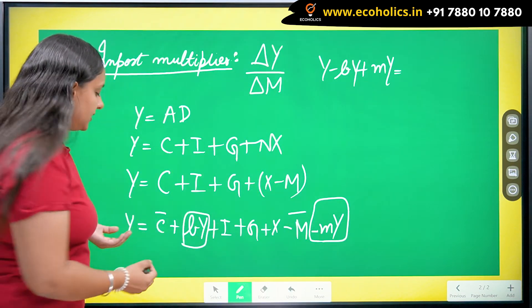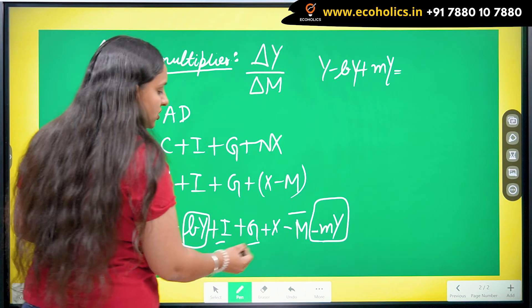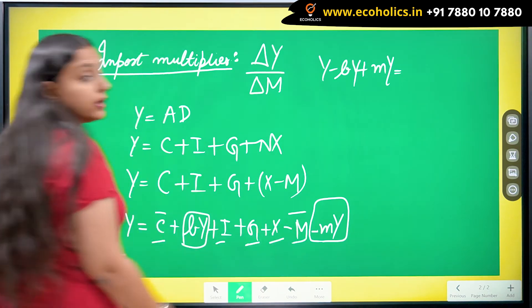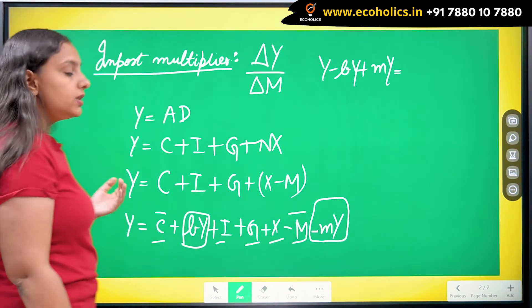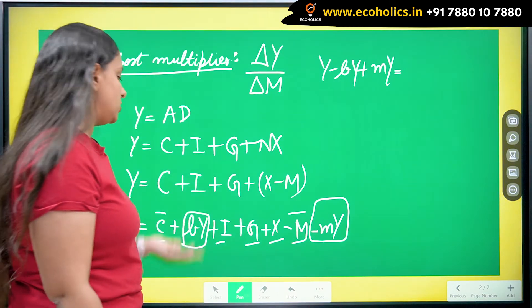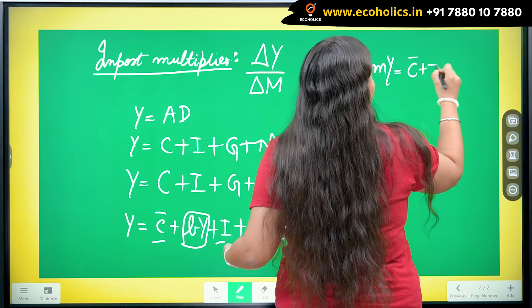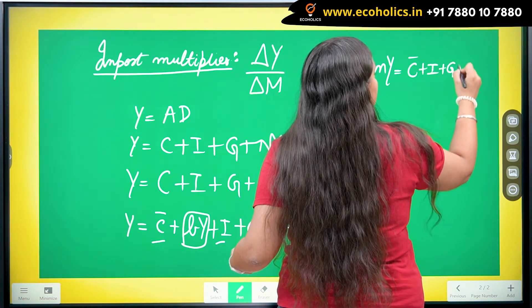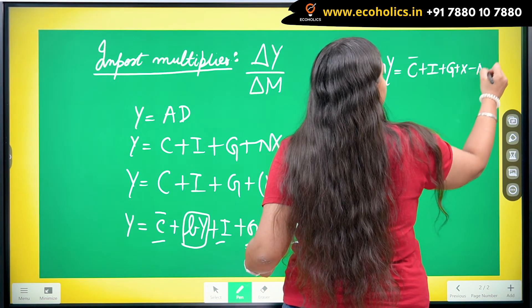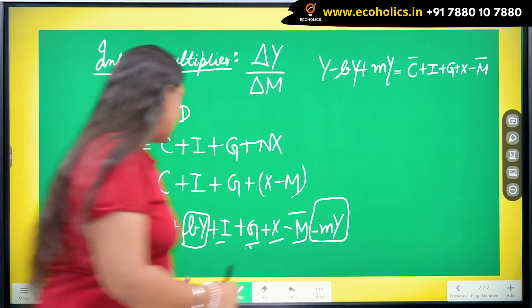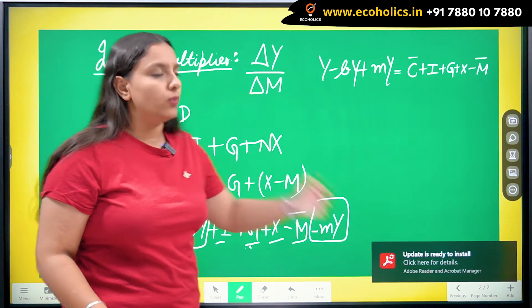When I come to all these things, C bar, I, G, X and even M bar, they are not changing. Only the imports are changing. I am going to write them in this way: C bar plus I plus G plus X minus M bar. I have written them down all.